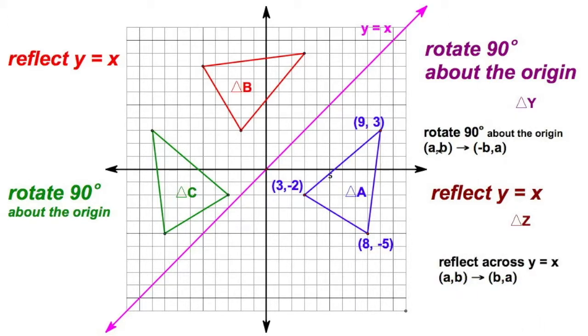So, now, A, B maps to, again, opposite of B, A. Well, 9, 3 becomes negative 3, 9. 3, negative 2, well, that would be opposite of negative 2, positive 2, so 2, 3. 8, negative 5, opposite of negative, that's going to be positive 5, so 5, 8.